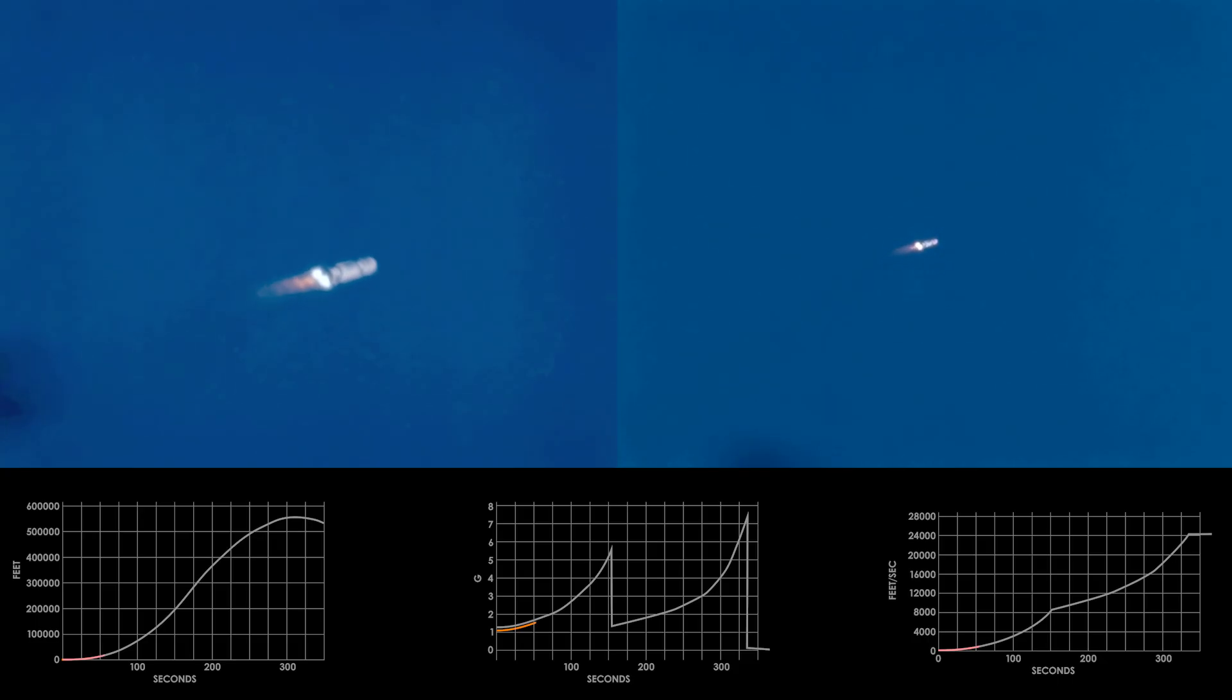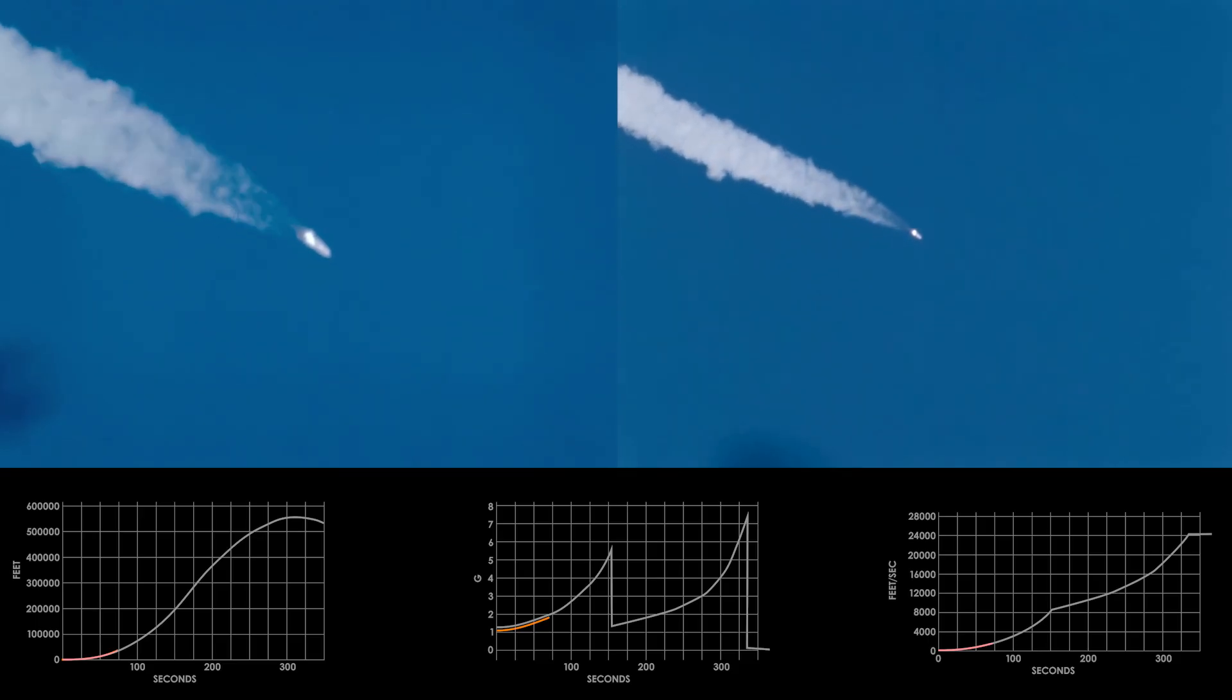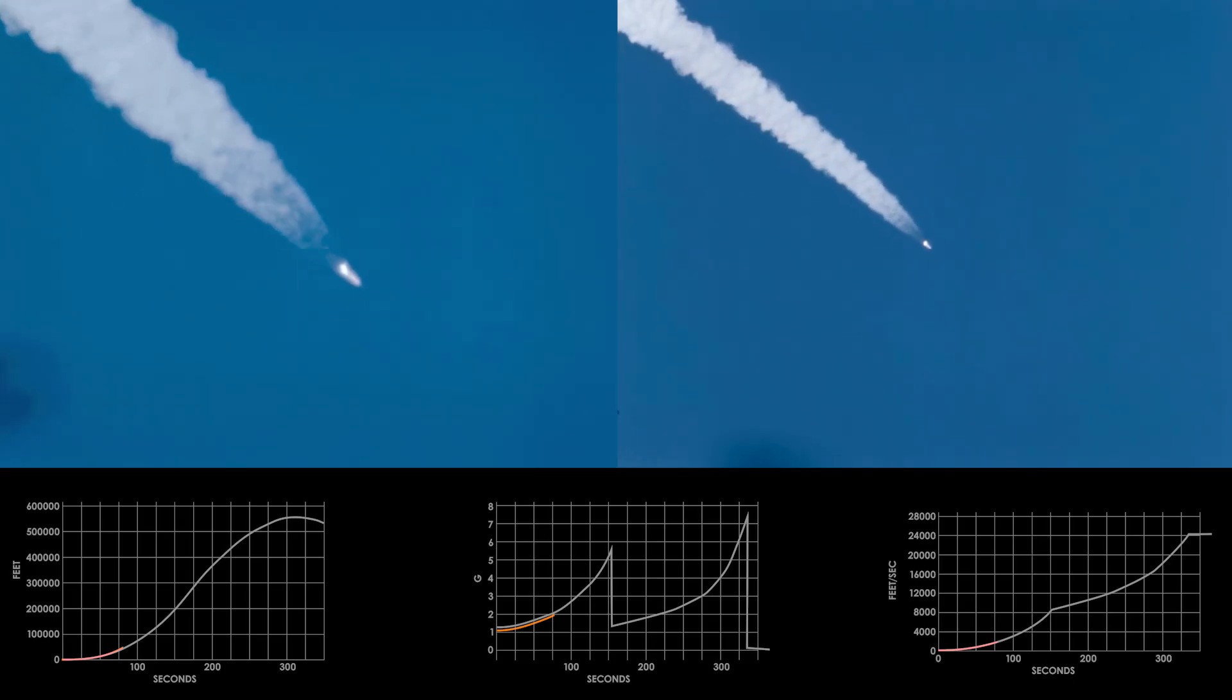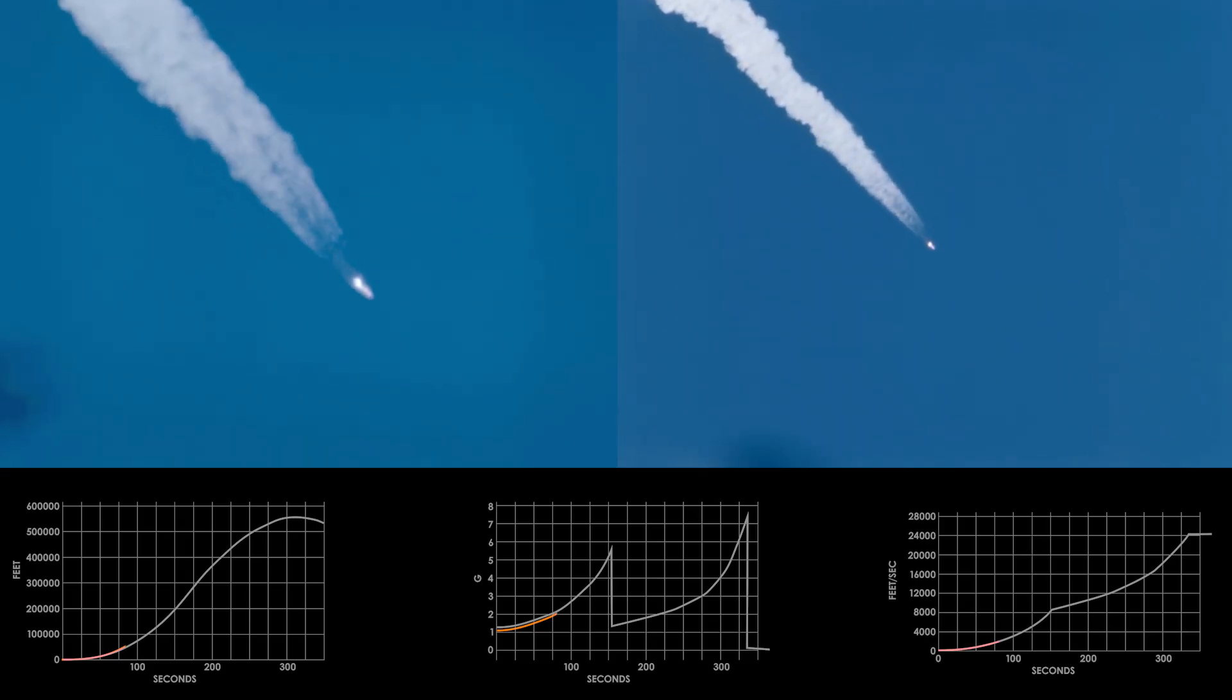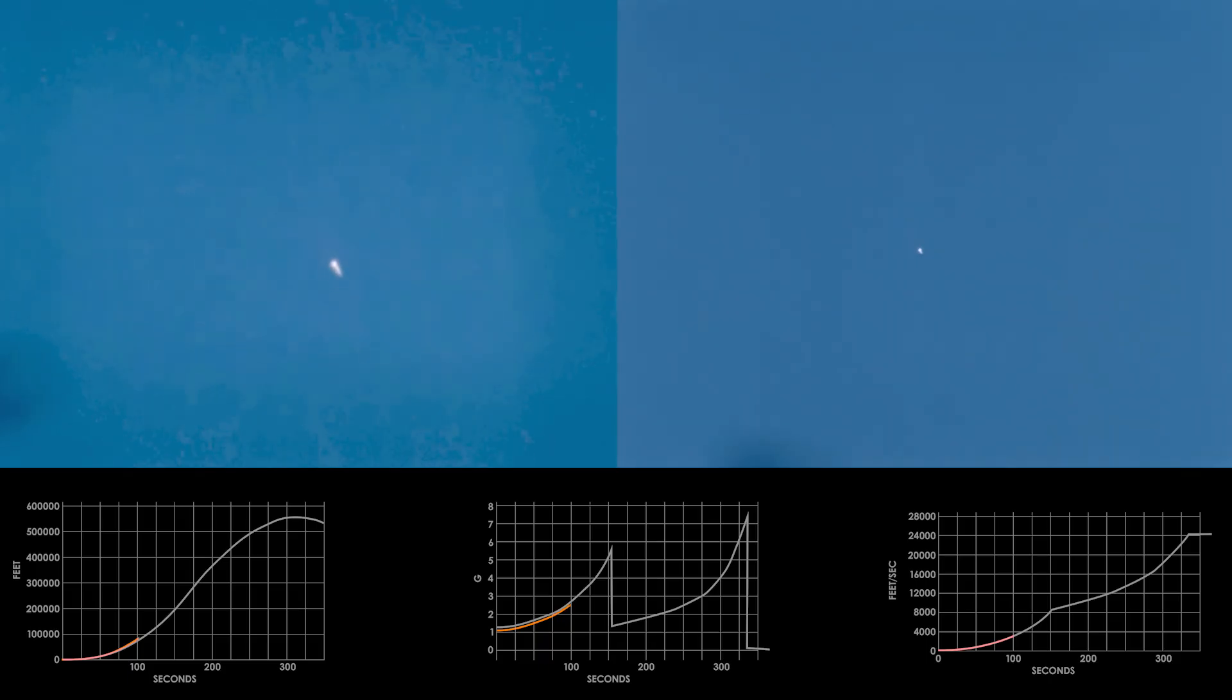Coming up one minute. Cabin pressure relieving at 5.8, 5.8 PSI in the cabin. 3 minutes, 3 minutes and 59 seconds after the hour. Time 1 minute and 32 seconds into the flight. All reports green at this point. We're still go.